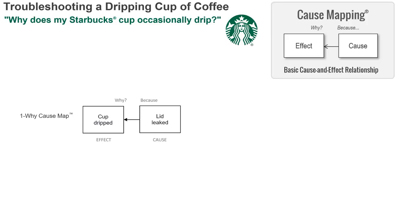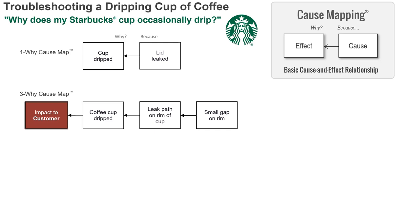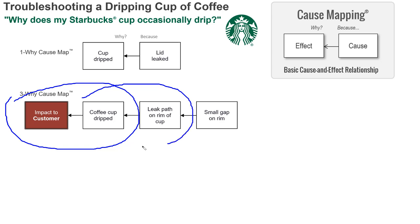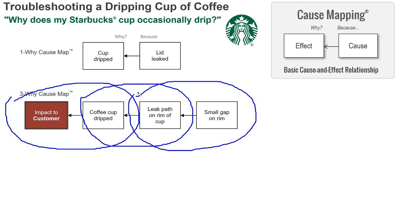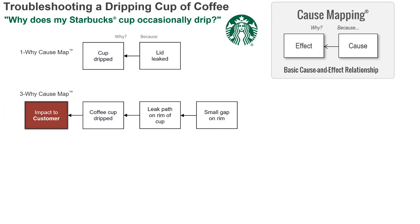If you step through this, you can add more detail. It's a simple cause-and-effect relationship — effect on the left, cause on the right. If we expand it a bit: the real issue is the customer is not happy. That impacts the customer goal because the coffee cup dripped, and the cup dripped because there's a leak path on the rim. That gap creates the leak path. So there are three cause-and-effect relationships here — that's a three-why.